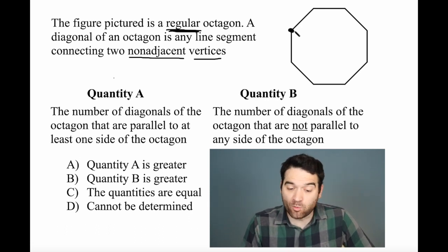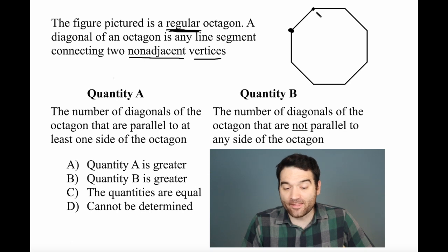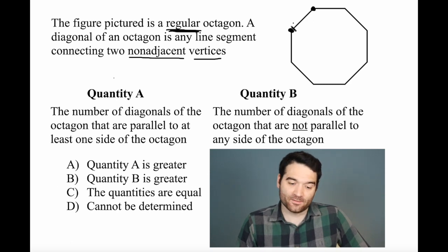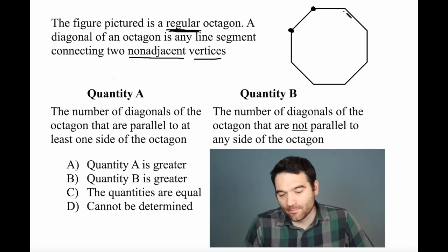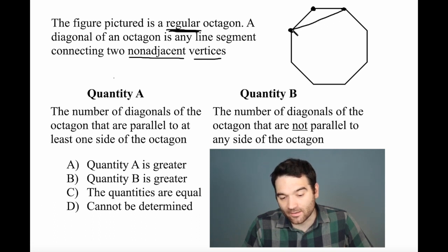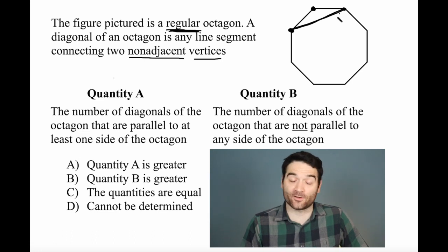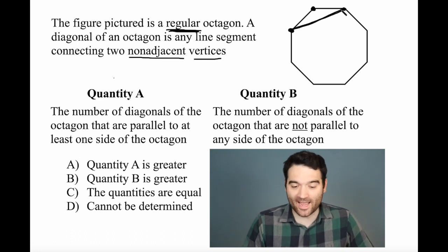And a diagonal is a line that connects two non-adjacent ones. So, for instance, this point right here and this point right here are adjacent, meaning that the line that connects them is not a diagonal, it's a side. But this one and this one, these two right here, are indeed vertices that are non-adjacent. So that means that that's going to be a diagonal.